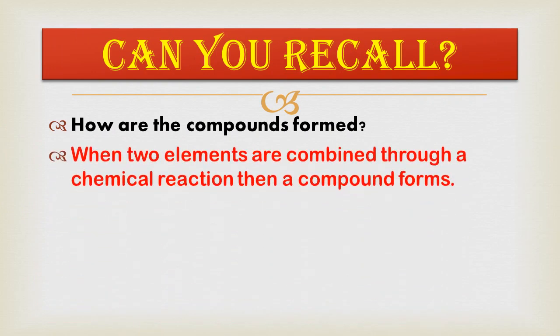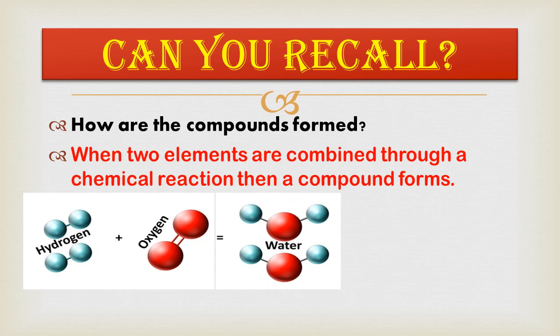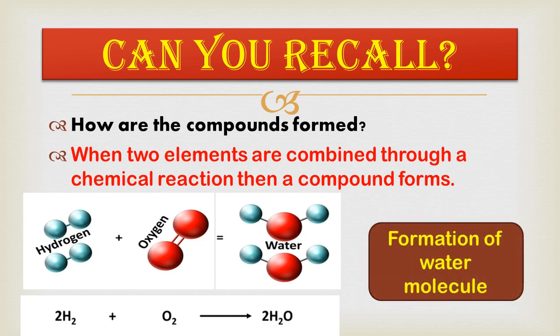The next question is: how are compounds formed? When two elements are combined through a chemical reaction, a compound is formed. For example, when hydrogen and oxygen combine they form a water molecule. The chemical reaction is: 2H₂ + O₂ → 2H₂O. So two water molecules are formed from this combination of hydrogen and oxygen.